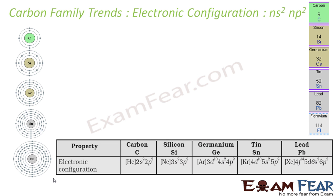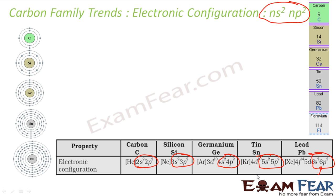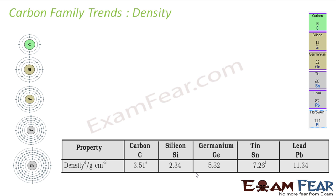The electronic configuration of group 14 elements is ns²np² form. So carbon is ns²np², silicon is ns²np², germanium is ns²np², tin is ns²np², and lead is ns²np² where n is 6, n is 5, n is 4, n is 3, and n is 2 respectively. This is the general electronic configuration.